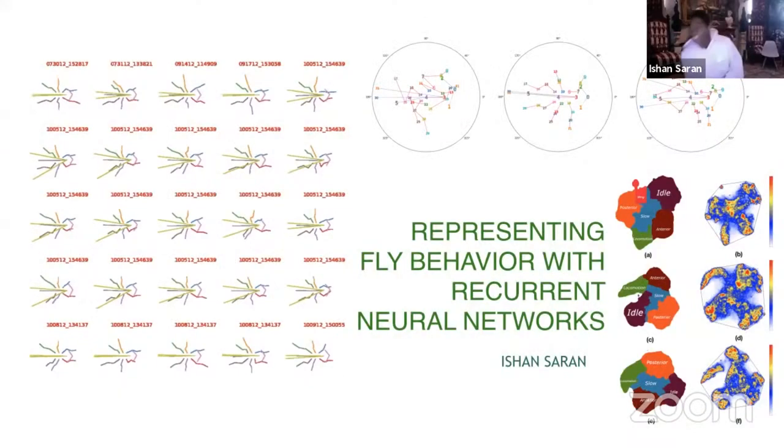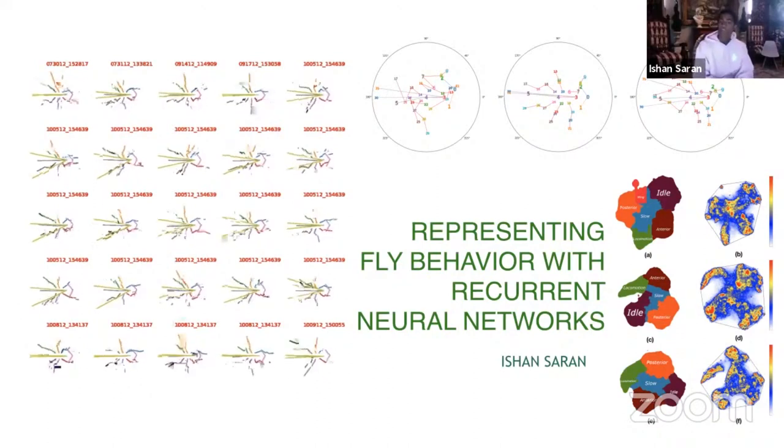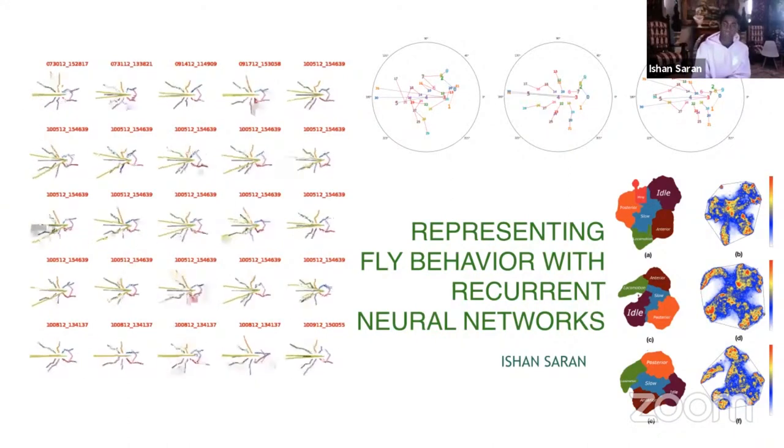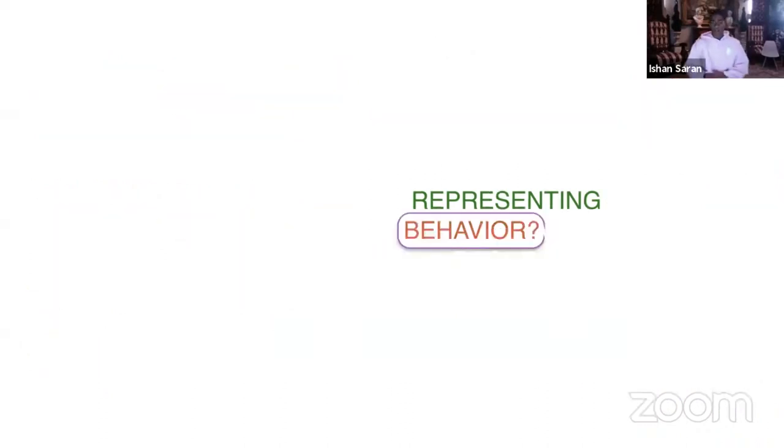Cool, thanks so much. Thank you all for listening. My talk is titled Representing Fly Behavior with Recurrent Neural Networks. Our lab is interested in behavior in a variety of animals, and we're trying to model it in a variety of ways. Behavior is this term we use a lot and it's entered our common parlance. We talk about behavior, we say someone's acting weirdly or behaving weird, but we haven't precisely defined what it means in a way that we can mathematically formalize it.